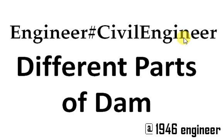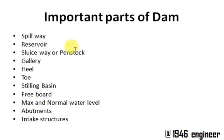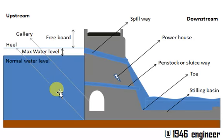Hello viewers, welcome to Engineer Hash Civil Engineer. In this video I'm going to talk about different parts of a dam. Many of you know about dams and different types of dams, but as an engineer you should know some important parts of a dam and be able to identify them. The list of important parts includes: spillway, reservoir, sluiceway or penstock, gallery, heel, toe, stilling basin, freeboard, maximum and normal water level, abutments, and intake structures. I have made a diagram — hope you like it — using which you should be able to identify those important parts.